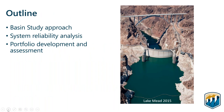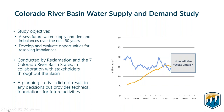I'm going to start by outlining the approach we took in the Basin Study very quickly. The 2012 Basin Study had two main objectives: first, to assess future water supply and demand imbalances over the next 50 years, and second, to develop and evaluate opportunities for resolving those imbalances. The study was a planning study — we didn't make any decisions, but it provided a technical foundation for future activities. It was conducted by Reclamation and the seven basin states in collaboration with many stakeholders, with a contracting team that included Jacobs (formerly CH2M Hill) and of course the RAND Corporation.